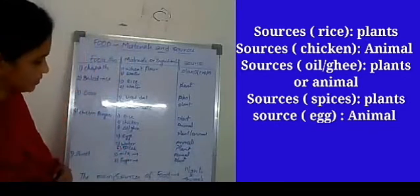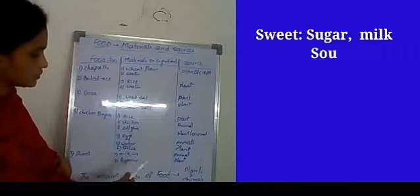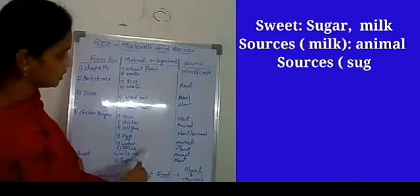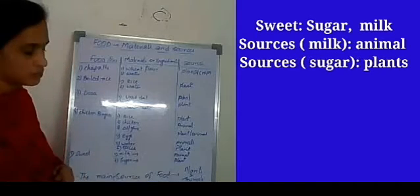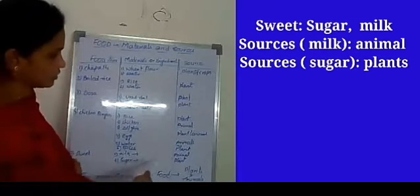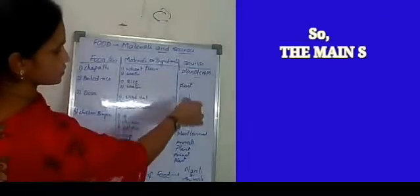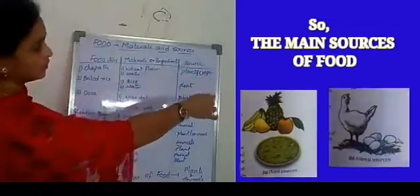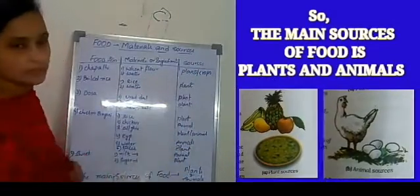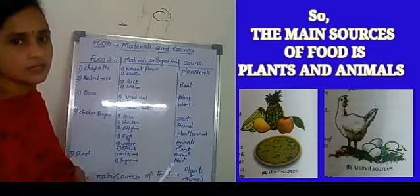For sweets, we generally require milk and sugar. Milk is an animal source — cows and buffaloes give us milk. Sugar is a plant source. So if you see the list of sources, you find only two: plants and animals. The main sources of food are plants and animals.